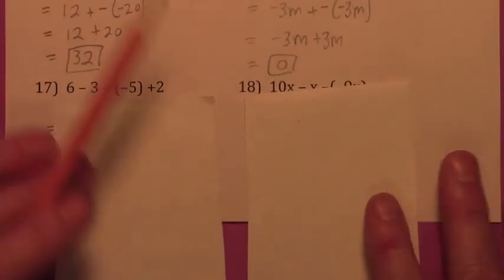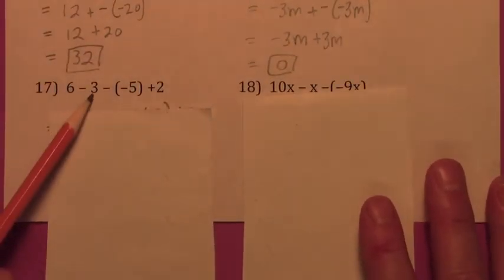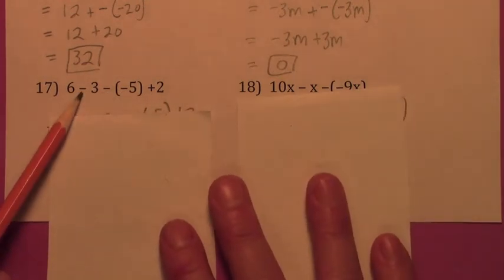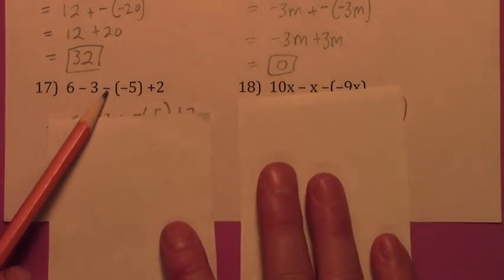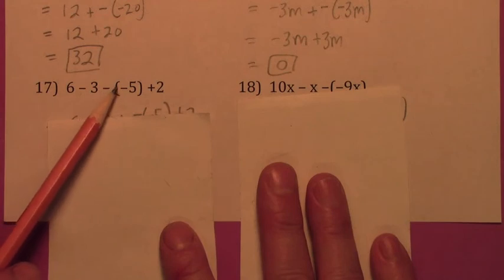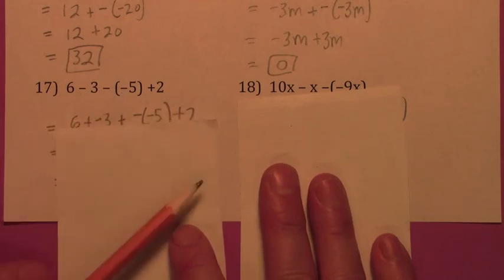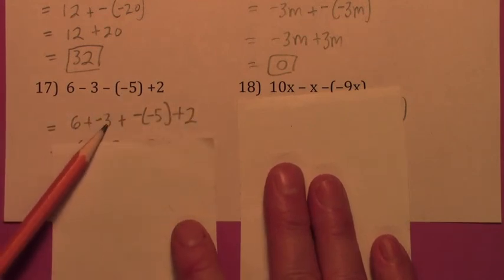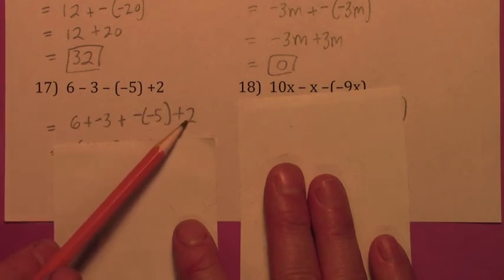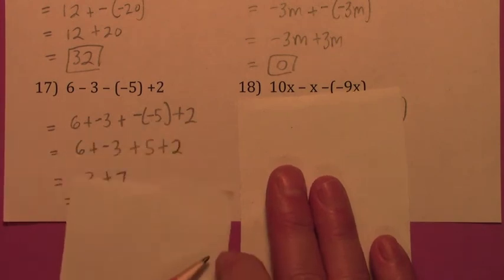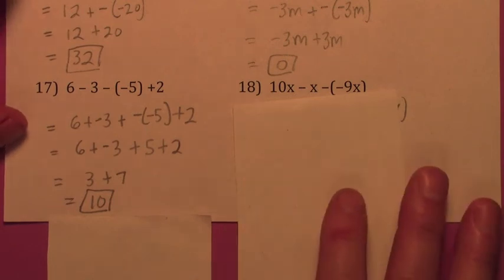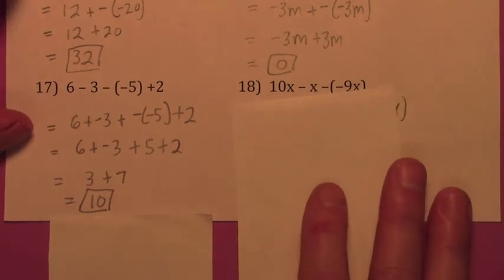On this one, read it back: 6 minus 3 minus negative 5 plus 2. Both minus signs change to plus and negative; the negative 5 stays negative 5. So you get 6 plus negative 3 plus the opposite of negative 5 plus 2. Get rid of the double negative, and when you add everything up, you get 3 plus 7, which is 10.